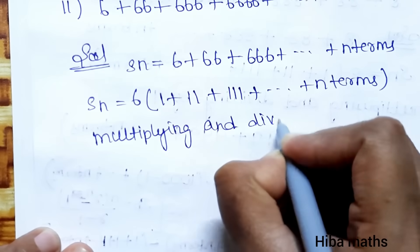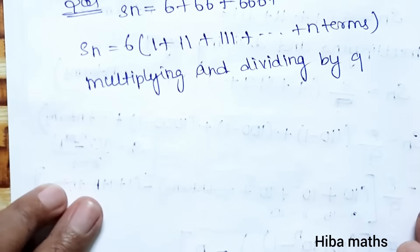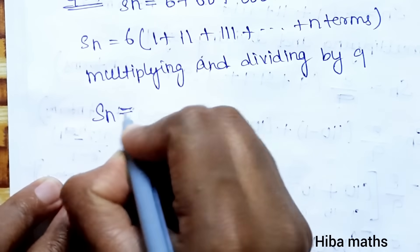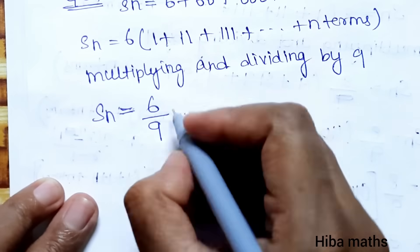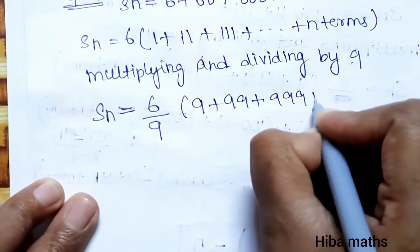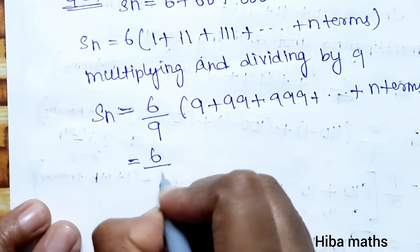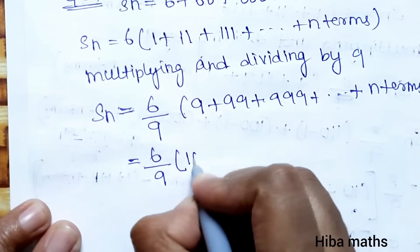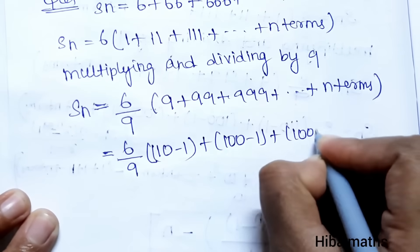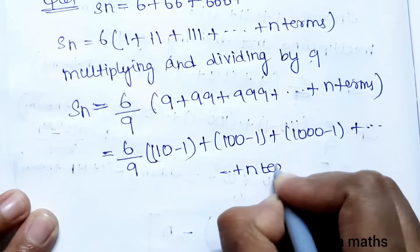Multiplying and dividing by 9, we get (6/9) times (9 + 99 + 999 + ... up to n terms). Rewriting each: 10 − 1, 100 − 1, 1000 − 1, and so on up to n terms.